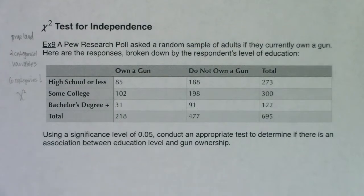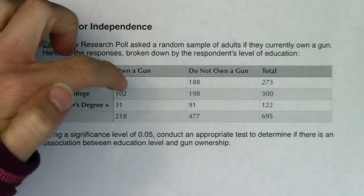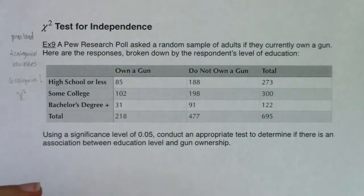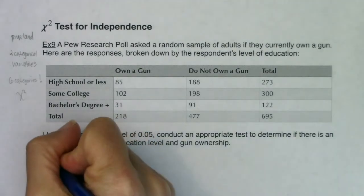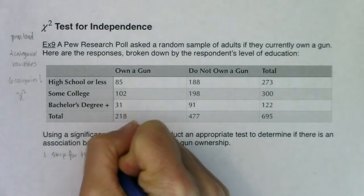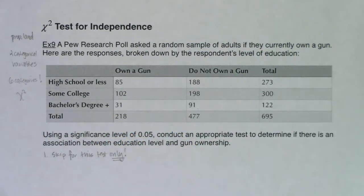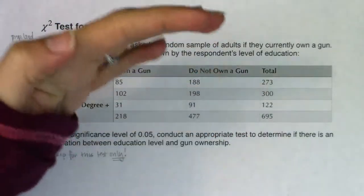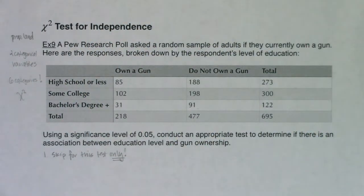Step one would be to define all of your parameters, but you can almost feel how cumbersome that would be. I would have to define the proportion of owns a gun in high school, proportion of not owns a gun in high school — I'd actually have to define six of them. So we're going to skip step one. This will be the only test where we skip step one. If one variable had five categories and the other had four, you'd be defining 20 variables — it's just not worth it.